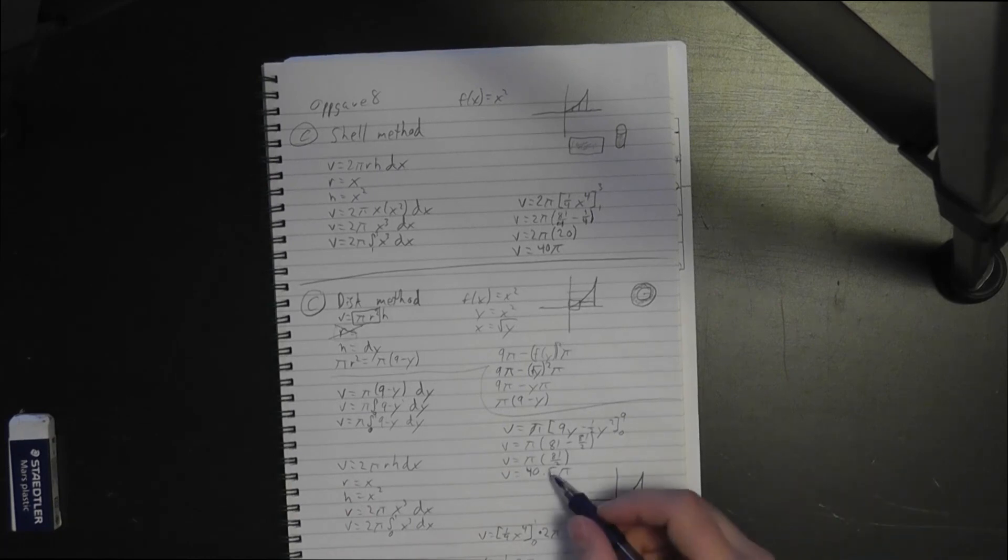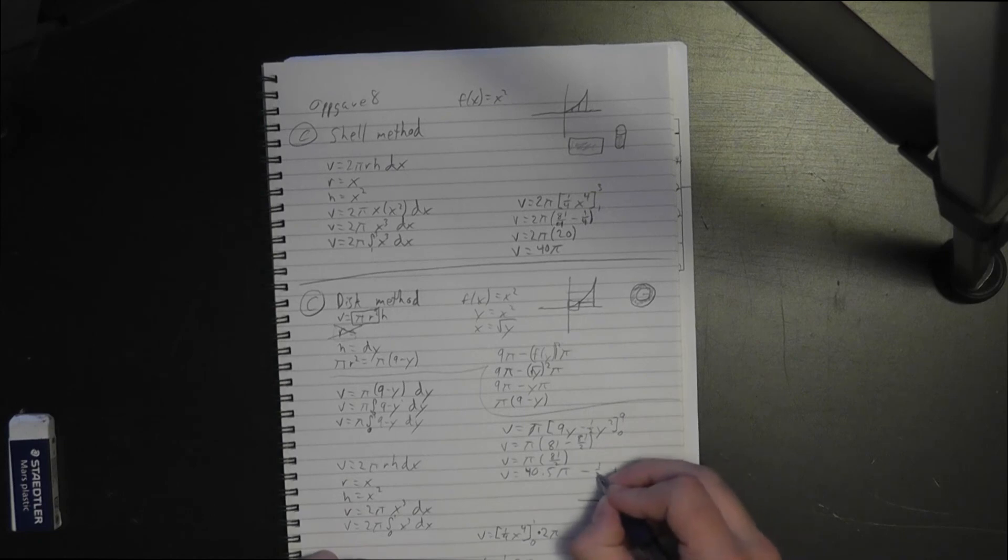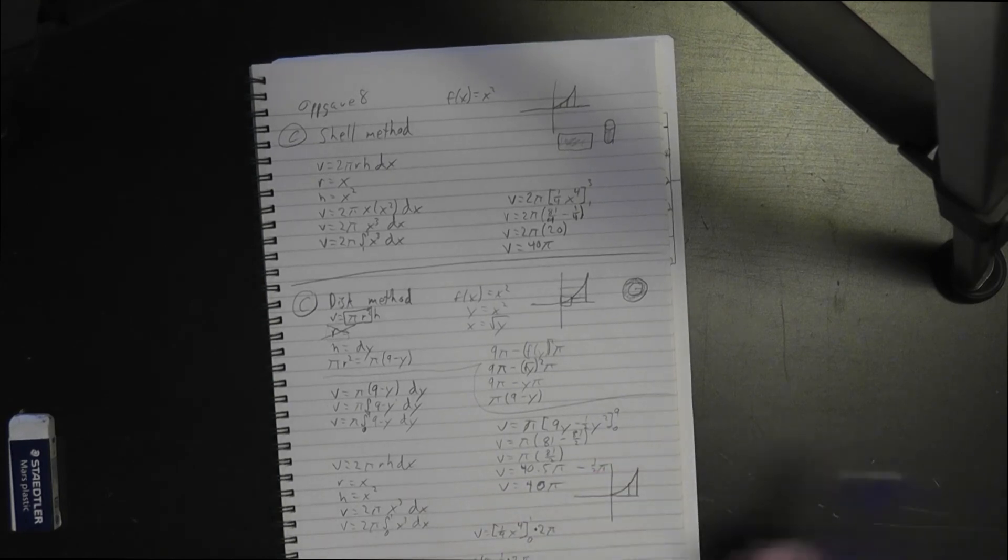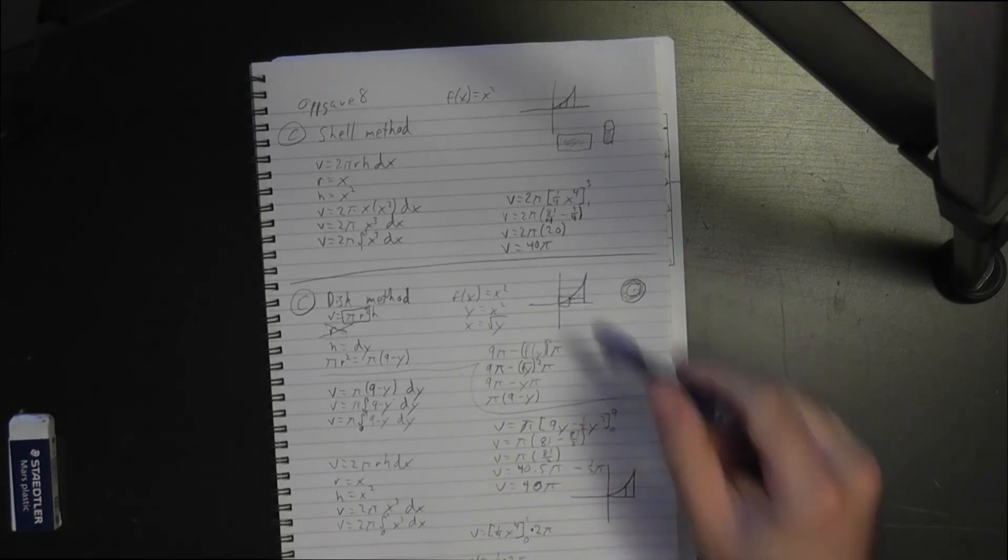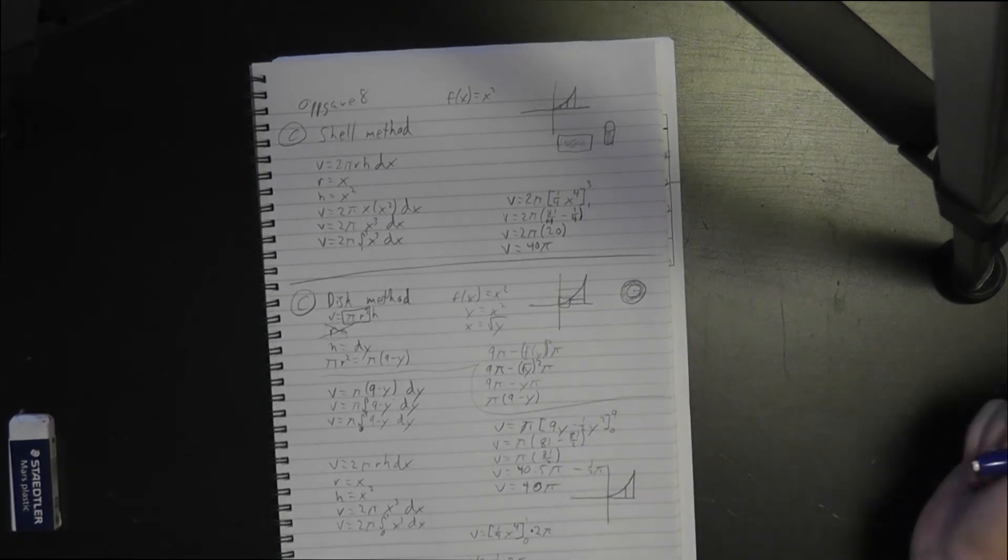And if you look up here, how much were we off by? A half pi. Subtract 1 half pi, and you get that v equals 40 pi. Same answer, different way of doing it. Of course, you would use the shell method, but if you need to use the disk method, this is the way you would think about it.